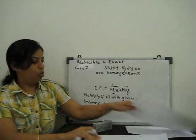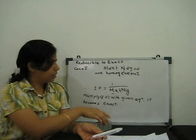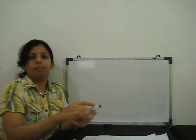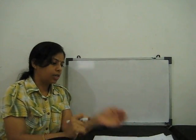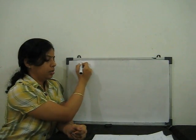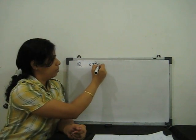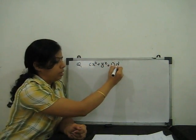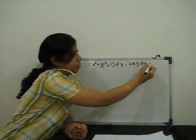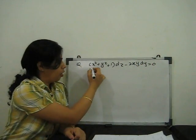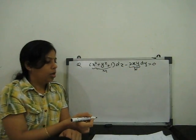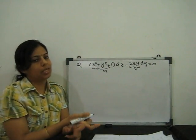Now we go through some problems. We will discuss problems of reducible to exact, taking maybe one example for each case. For the first case problem, the question is: (x² + y² + 1) dx - 2xy dy = 0. Here M = x² + y² + 1 and N = -2xy. First we check whether it is exact or not.